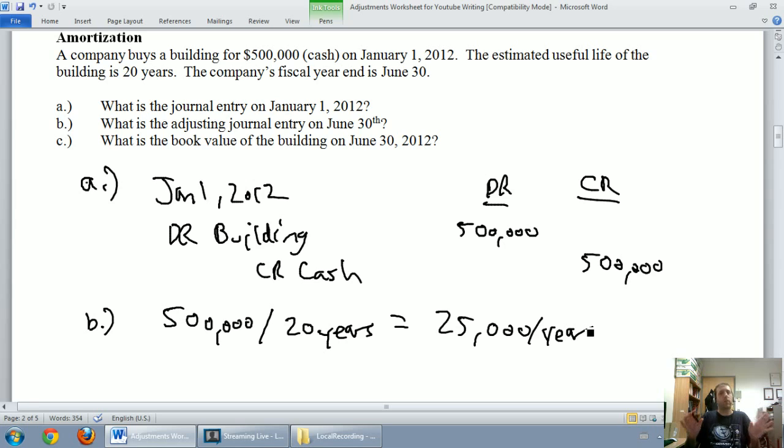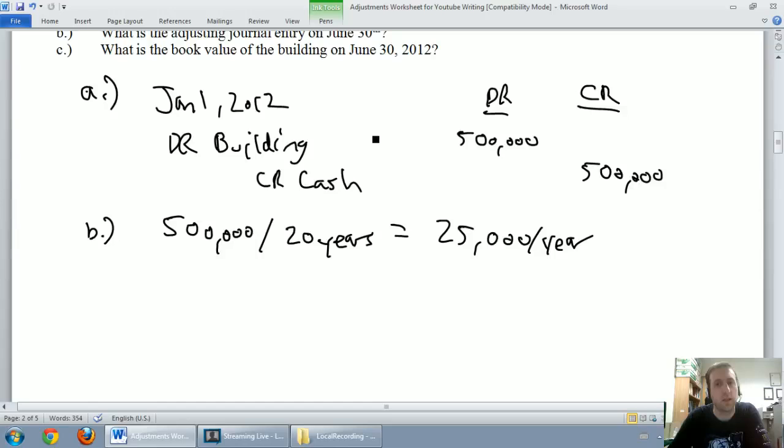$500,000 divided by 20 years is $25,000 per year. My building is going to lose value at a rate of $25,000 per year. I have a building of $500,000. It's only going to be useful for 20 years, after which time maybe I'll need to replace it or it'll fall over. My building loses value at a rate of $25,000 per year. It depreciates at that rate or amortizes at that rate. Our fiscal year end is June 30th. January 1st to June 30th means we're only looking at 6 months out of the year. It's a $25,000 per year amortization rate, but I'm not looking at a full year. I'm looking at 6 out of the 12 months in a year. I multiply by 6/12, or half a year. It's half a year's worth of amortization. $25,000 times 6 out of 12 is $12,500.